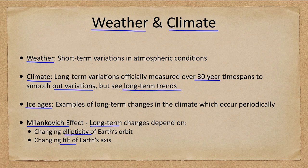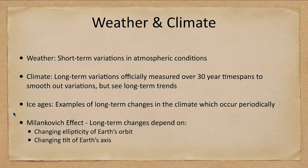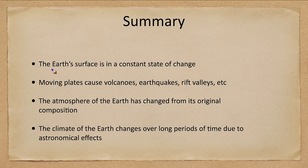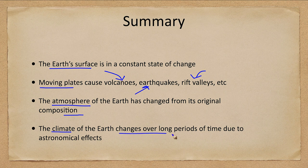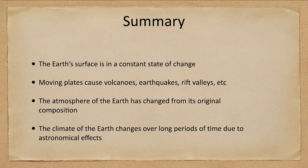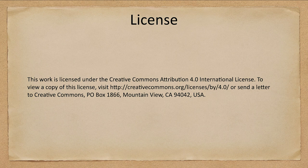We will look at climate in more detail in future lectures. To summarize: Earth's surface is in a constant state of change, with moving plates giving us volcanoes, earthquakes, rift valleys, and more. The atmosphere of Earth has changed from its original composition, and the climate of Earth is known to change over long periods of time due to astronomical effects such as the tilt of Earth's axis and the ellipticity of Earth's orbit. That concludes this lecture on Earth's surface and atmosphere. We'll be back again next time for another topic in astronomy — have a great day, everyone.